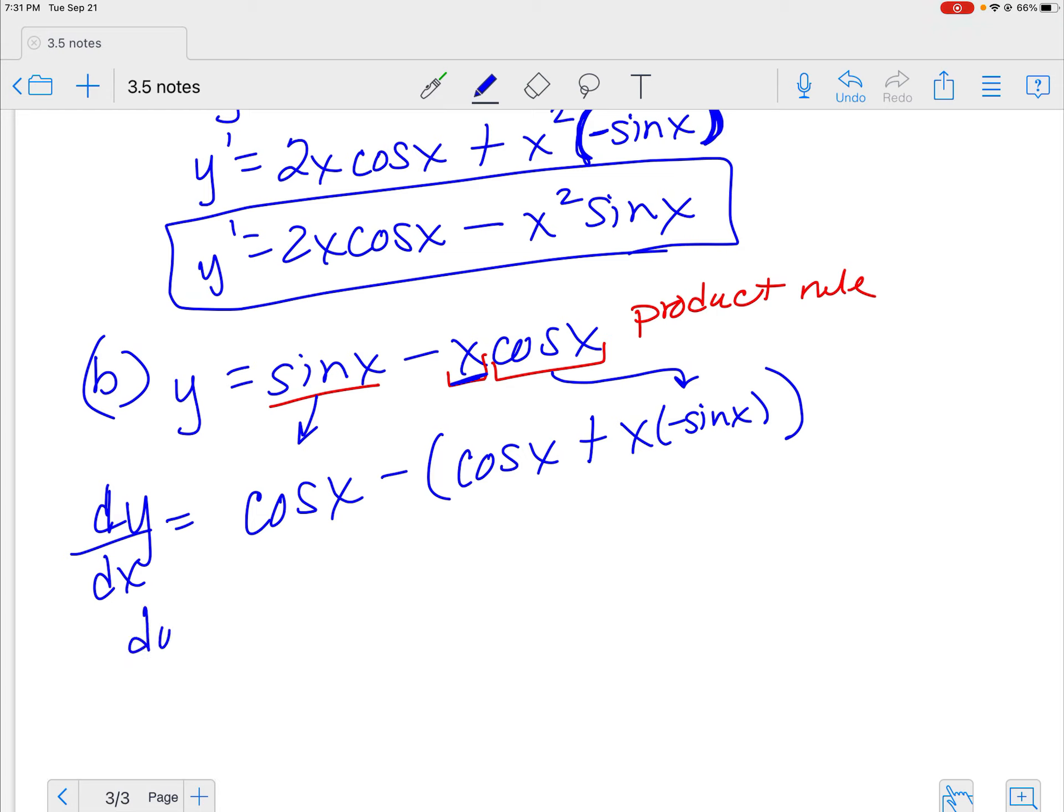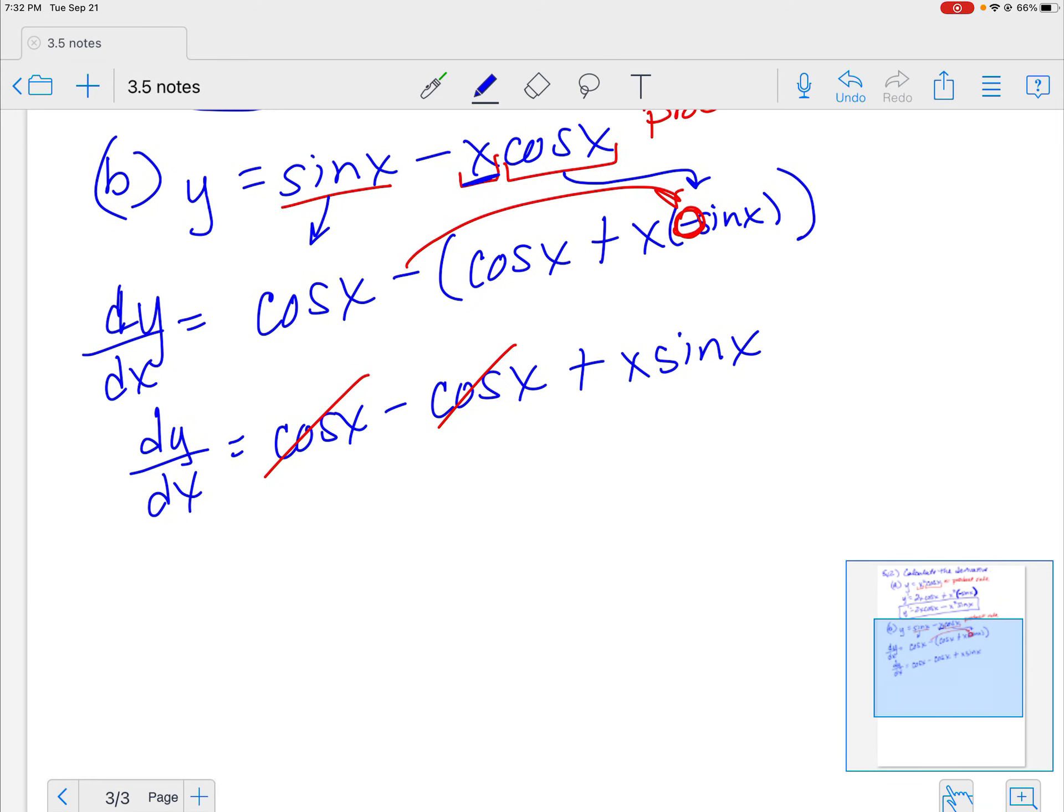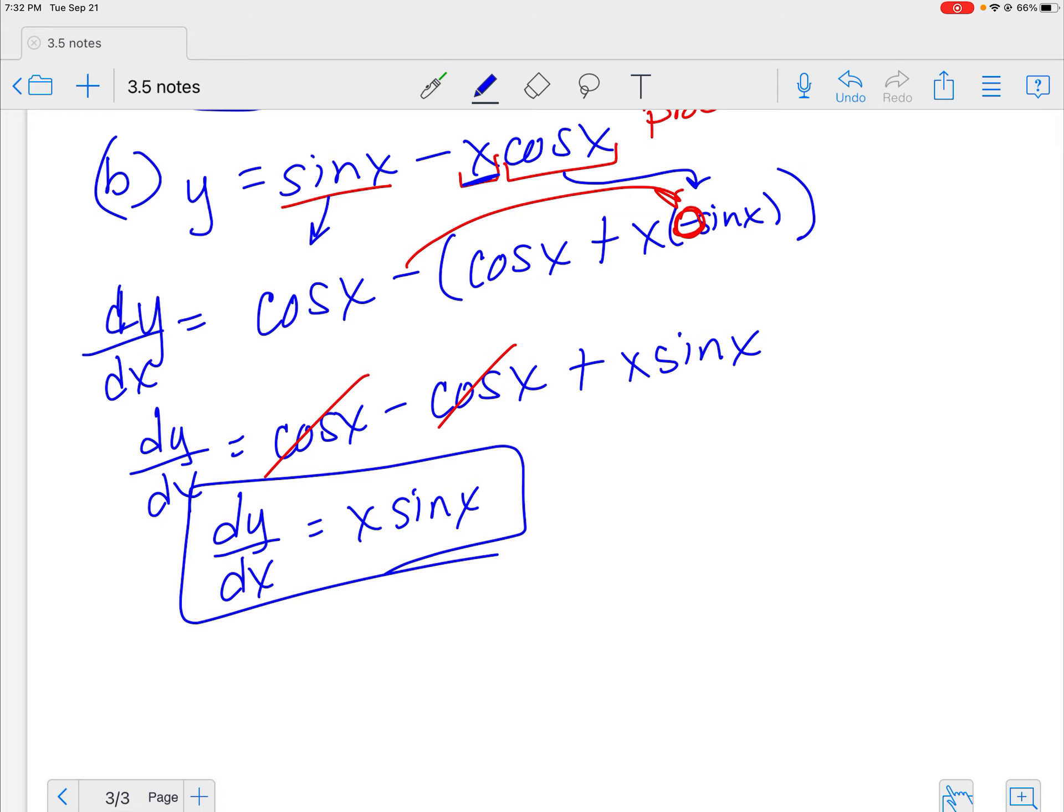Now, let's clean this up. dy dx is equal to the cosine of x minus the cosine of x. Now look what happens here. This is a negative back here with my sine, and I'm distributing that negative to it. So a negative times a negative is a positive x sine of x. Positive cosine, negative cosine cancels. So my derivative is x sine of x. Cool, right?